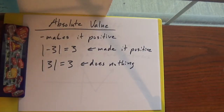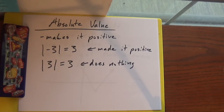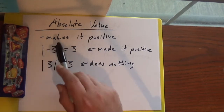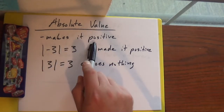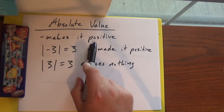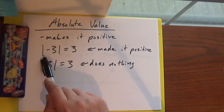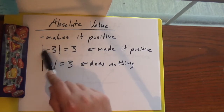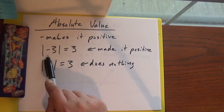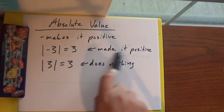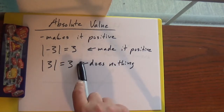Welcome back to Lake Math. Right now we're going to do absolute values. Basically the absolute value just makes whatever it is positive. So if we had a negative 3 inside our absolute value, it turns it into positive 3. So it made it positive.